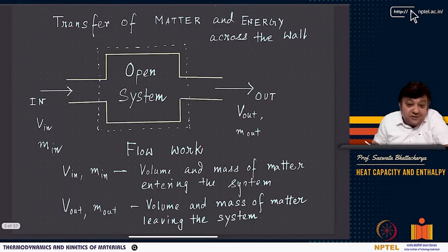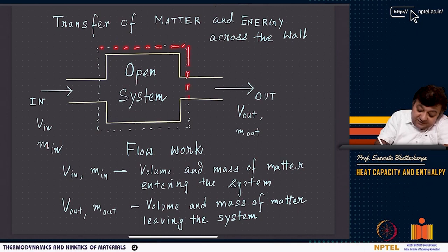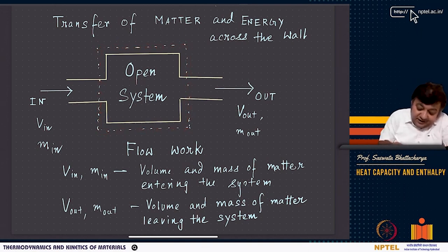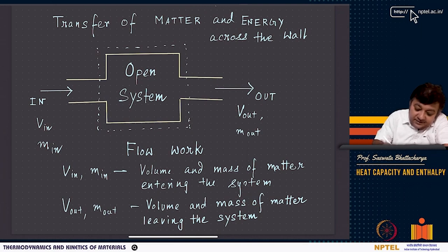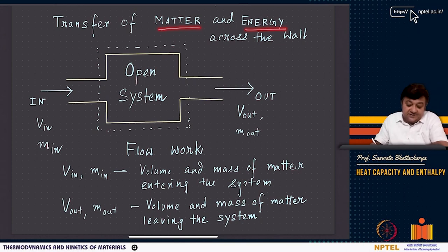For an open system, the system boundary allows both matter and energy exchange. Matter is pushed in and matter is pushed out across the boundary — it allows exchange of matter as well as energy.